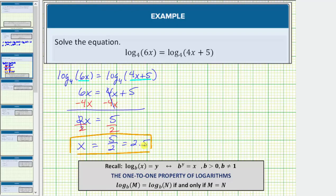Let's check our solution by substituting 5/2 back into the original equation. Performing this substitution gives us log base 4 of 6 times 5/2 equals log base 4 of 4 times 5/2 plus 5.